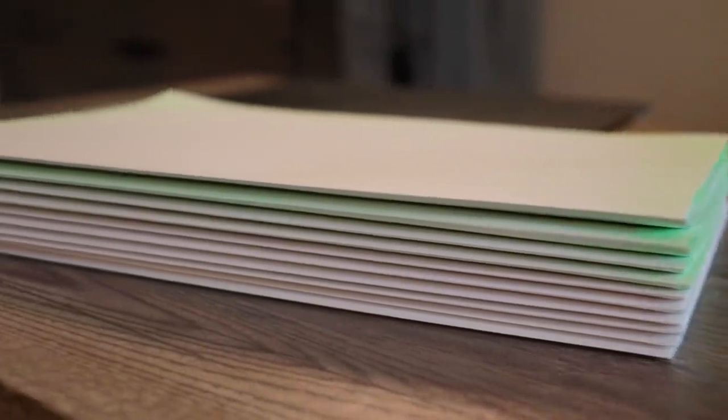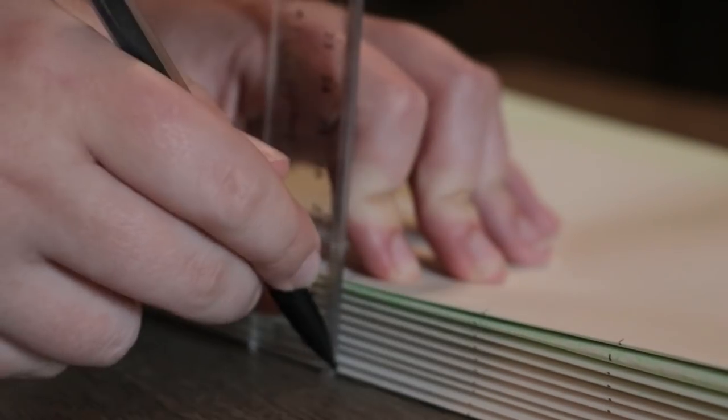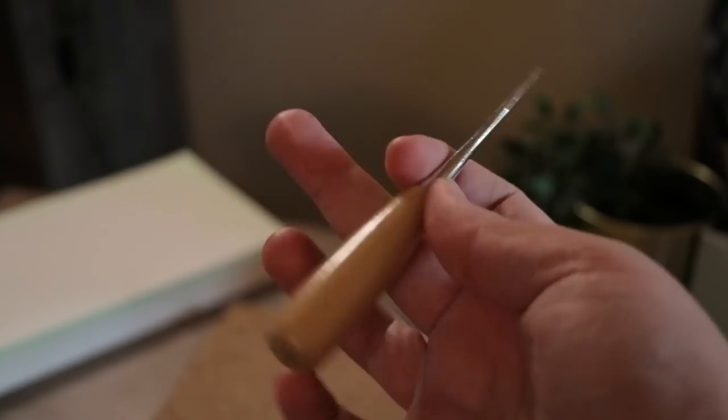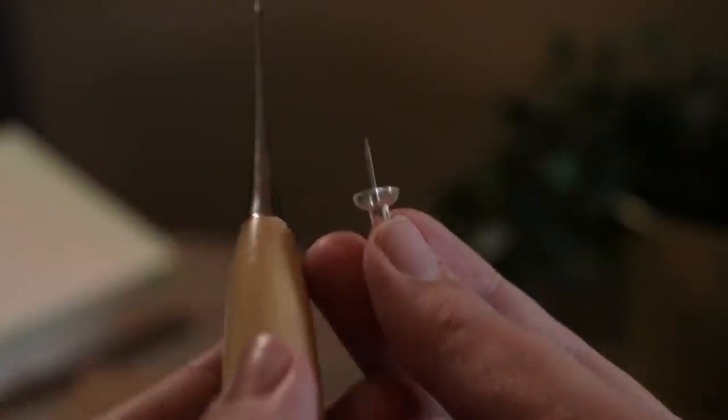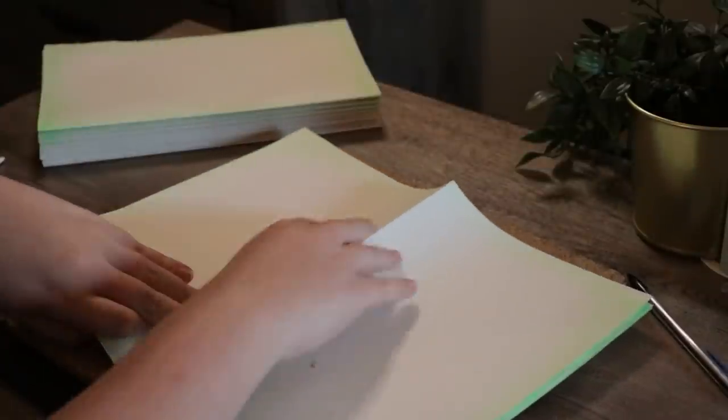Stack a bunch of random heavy stuff on the pages to press them. Then I mark where I'm going to punch the holes on each signature. I'm going to be using my fancy owl to punch the holes, but a thumbtack has worked just fine in the past for me as well. I use these square cork boards as a punch pad, and then along the crease, I punch out holes along the marks.